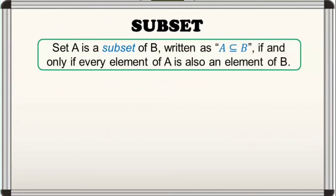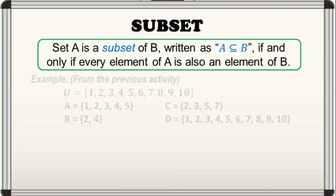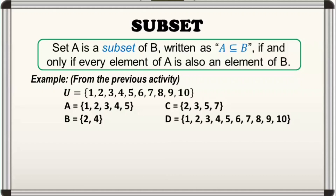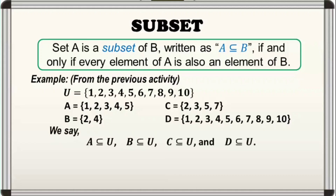Ano naman ang ibig sabihin ng subset? Set A is a subset of B — written as A subset of B — if and only if every element of A is also an element of B. Sa ating salita, ang set A ay matatawag lamang na subset ng set B kung lahat ng elements kay set A ay nandoon din kay set B. From our previous activity, set A is a subset of set U dahil lahat ng elements kay set A ay nandoon din kay set U. Ganon din kay set B, set C, at set D — sila ay subsets ng set U.